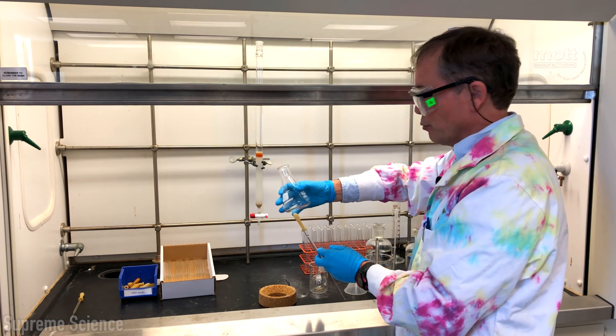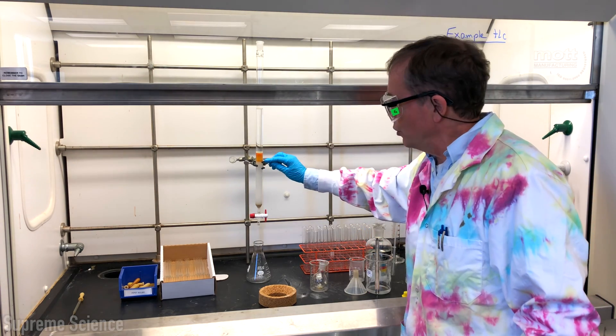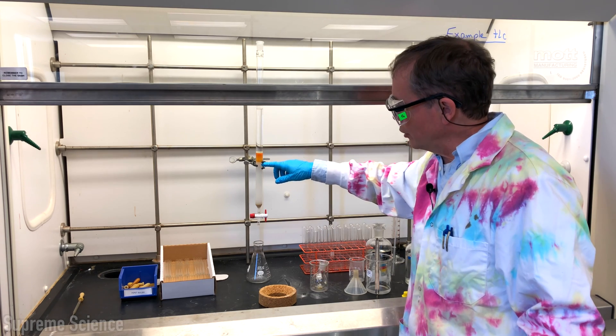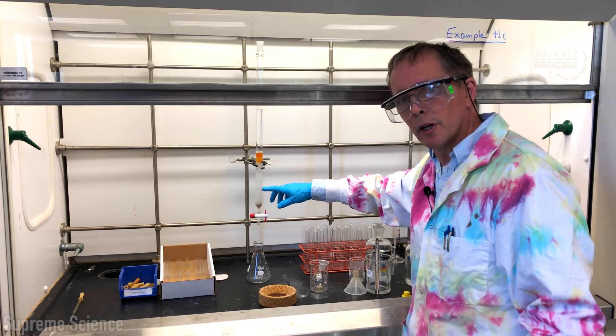If at any time you run out of your 2 to 1 eluent, you just make up some more. With this particular sample, we won't start collecting our fractions until the colored material is at least 3 quarters of the way down the column. So we've got a few minutes to go.